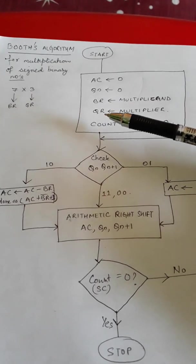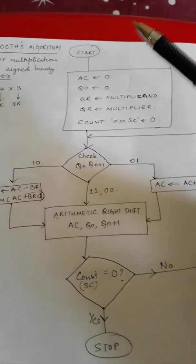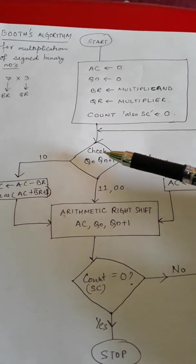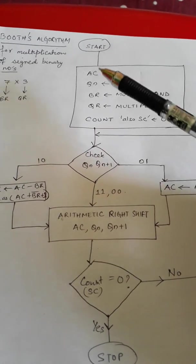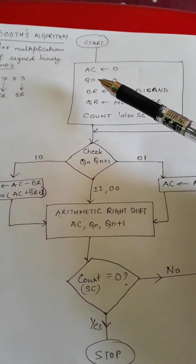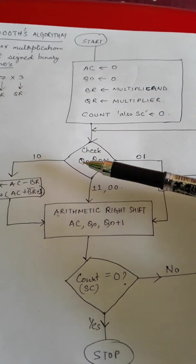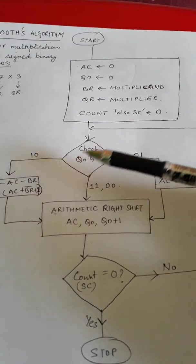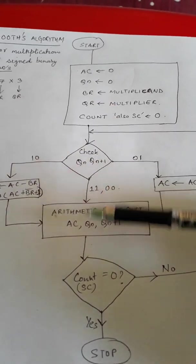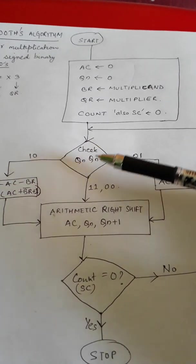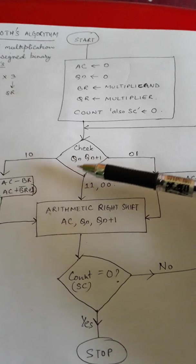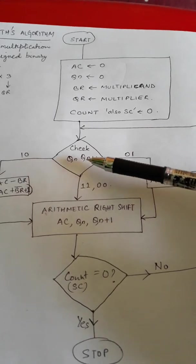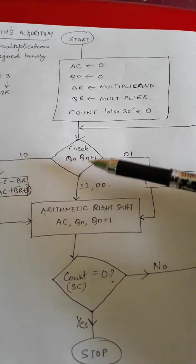Now we'll start off with the check process. In the check process we will check the value of bits which are inside QN. Inside the QN we will have the binary value. This will be more clear when we see the example, but for the time being, in this check process we are checking the two last bits which will be stored in QN. We will be checking QN and QN plus one - that means the last two bits.